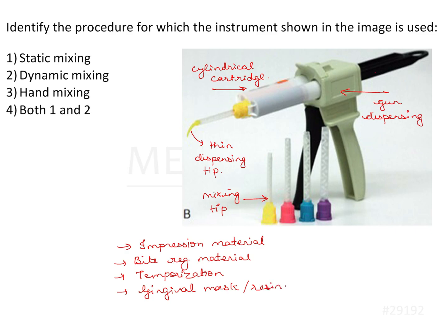These kinds of cartridges are very commonly available and popular in routine practice. There is this piston that goes into the cartridge and it pushes the material together. There is one base paste and one catalyst paste. Together they are mixed through this tip along the spiral and extruded through the yellow tip outside.